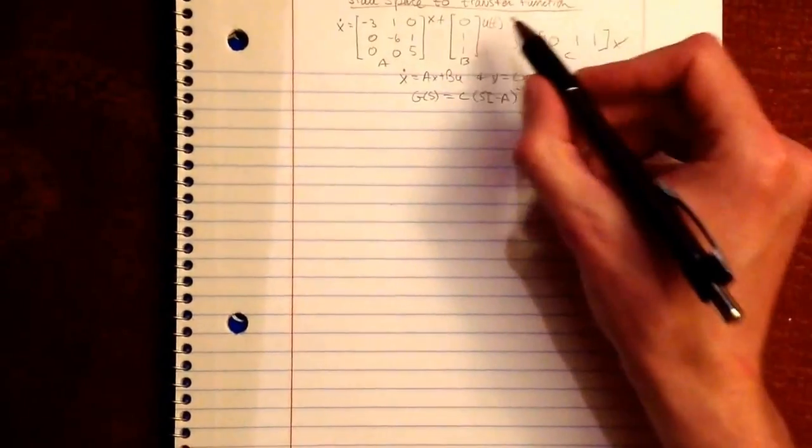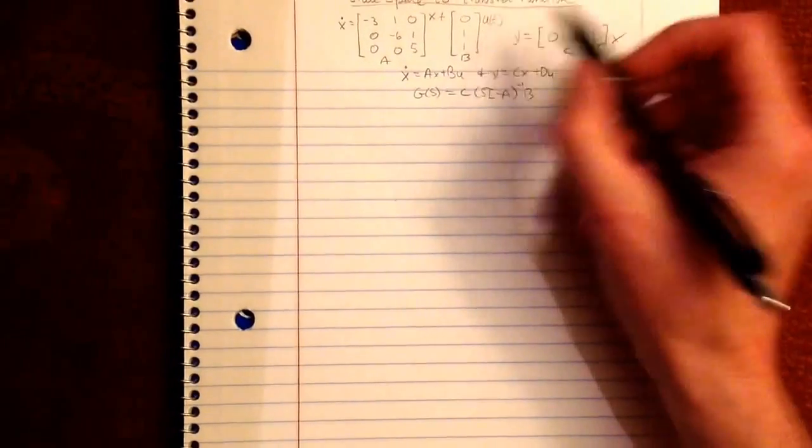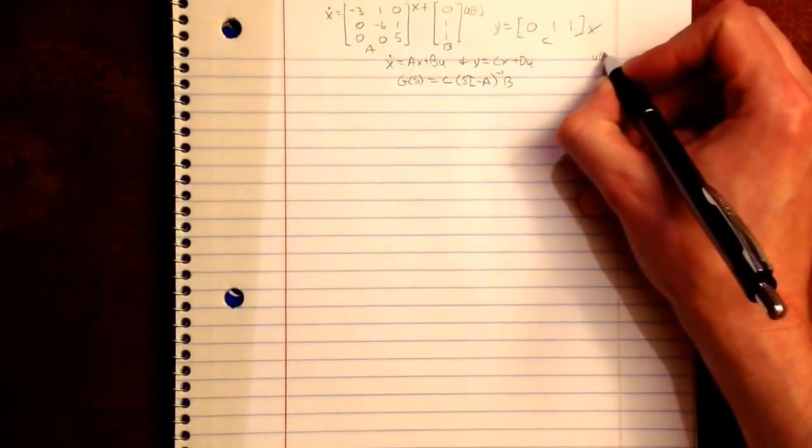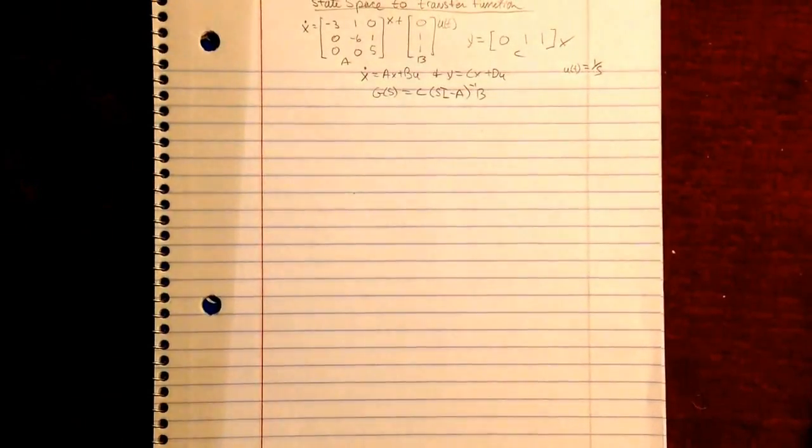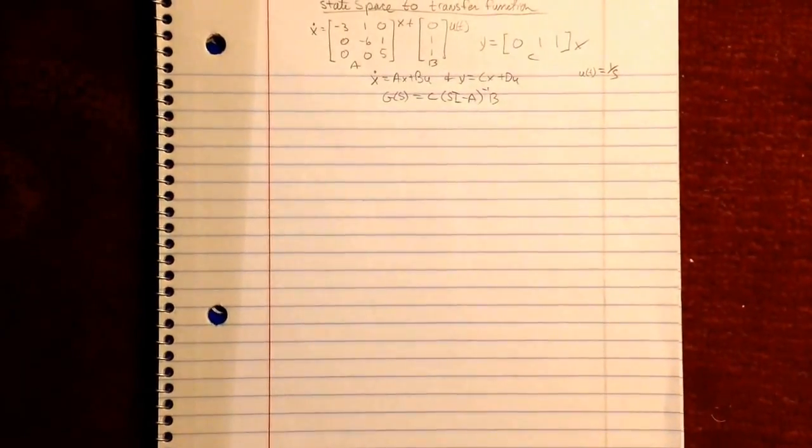You might notice in this setup there's U of T here. U of T in this problem is the step function, which just makes it even worse. But let's go about doing this.